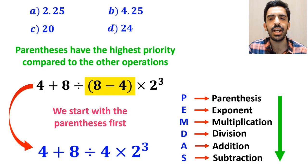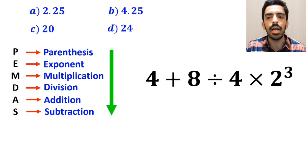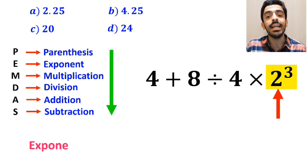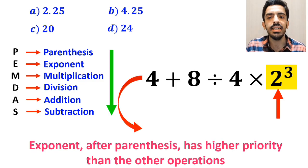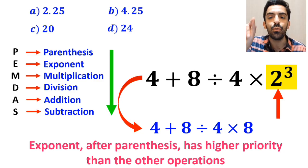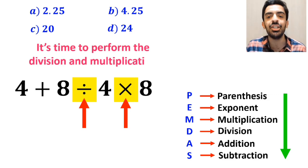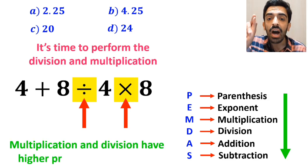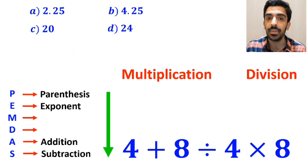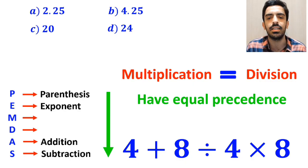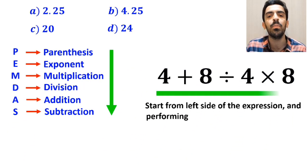So we'll start with the parenthesis first, because parenthesis have the highest priority. This gives us 4 plus 8 divided by 4 times 2 to the power of 3. In the next step, we go to the exponent, because exponent after parenthesis has higher priority than the other operations. This simplifies to 4 plus 8 divided by 4 times 8. Now it's time to perform division and multiplication, because they have higher priority than addition. We must pay close attention that multiplication and division have equal precedence, so we start from the left side of the expression.